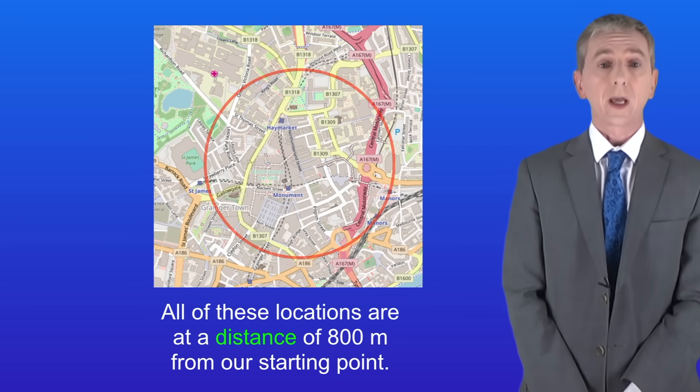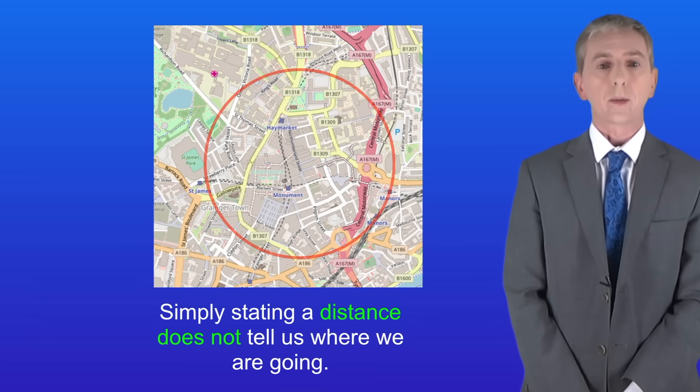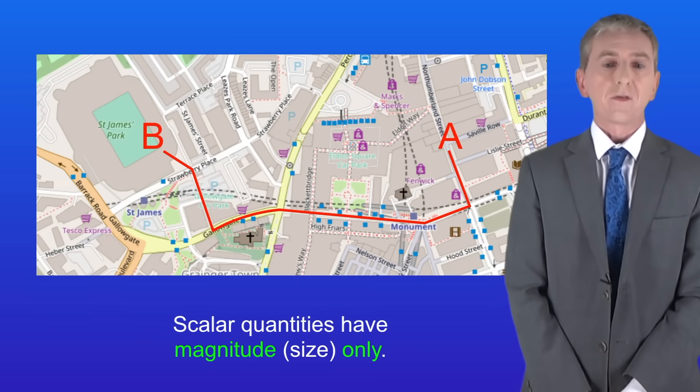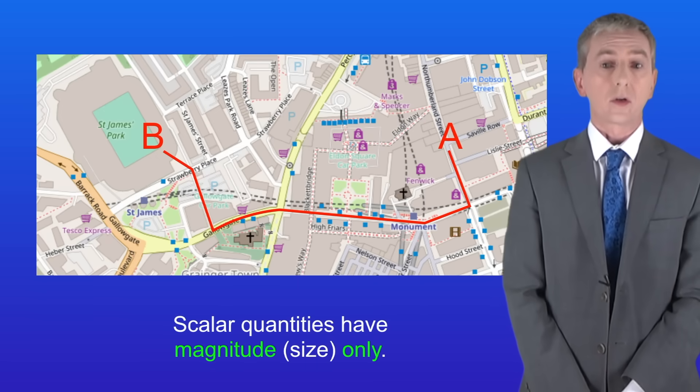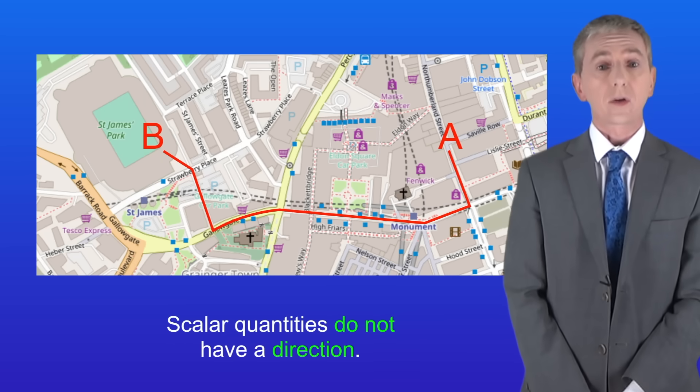All of these locations are at a distance of 800 meters from our starting point. So simply stating a distance does not tell us where we're going. As we said before, scalar quantities have magnitude, in other words size, only. Remember that scalar quantities do not have a direction.